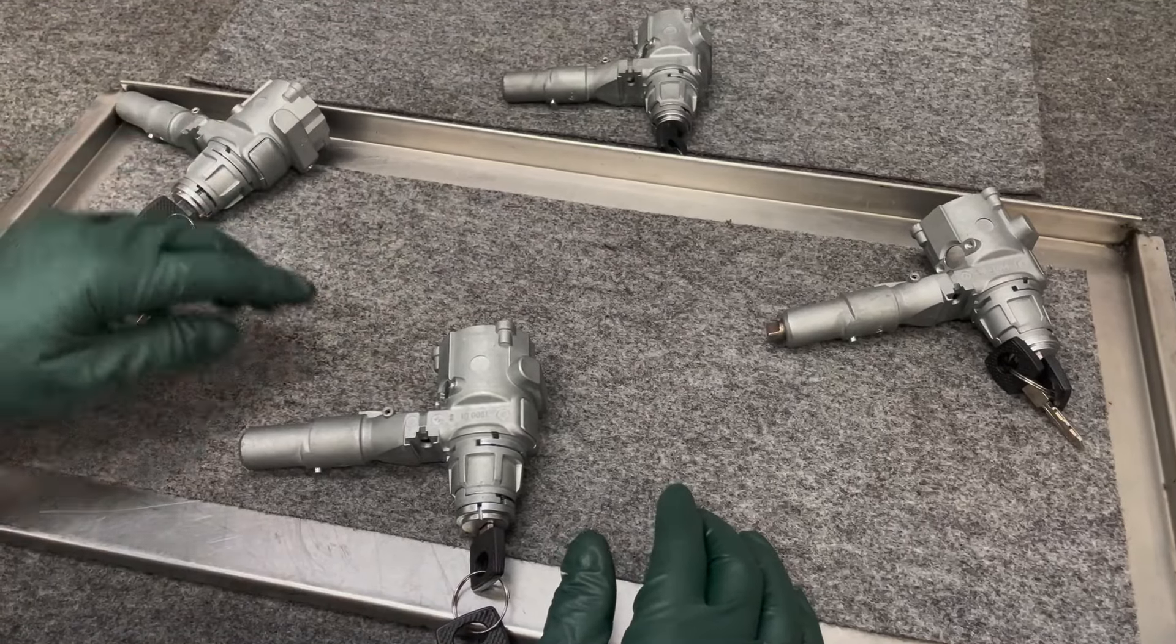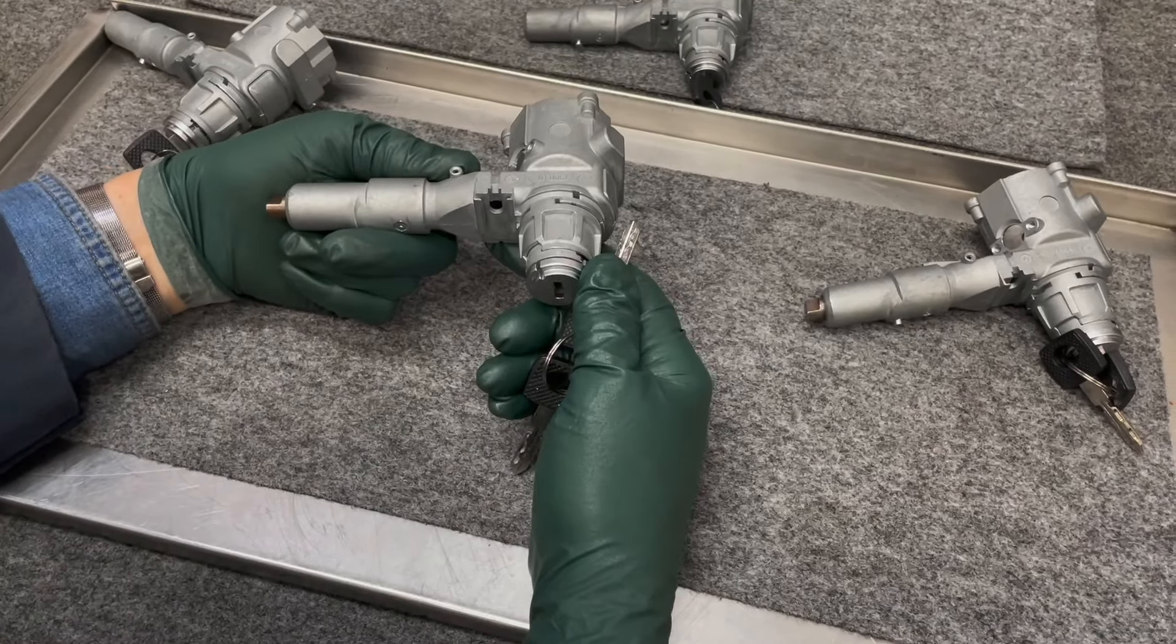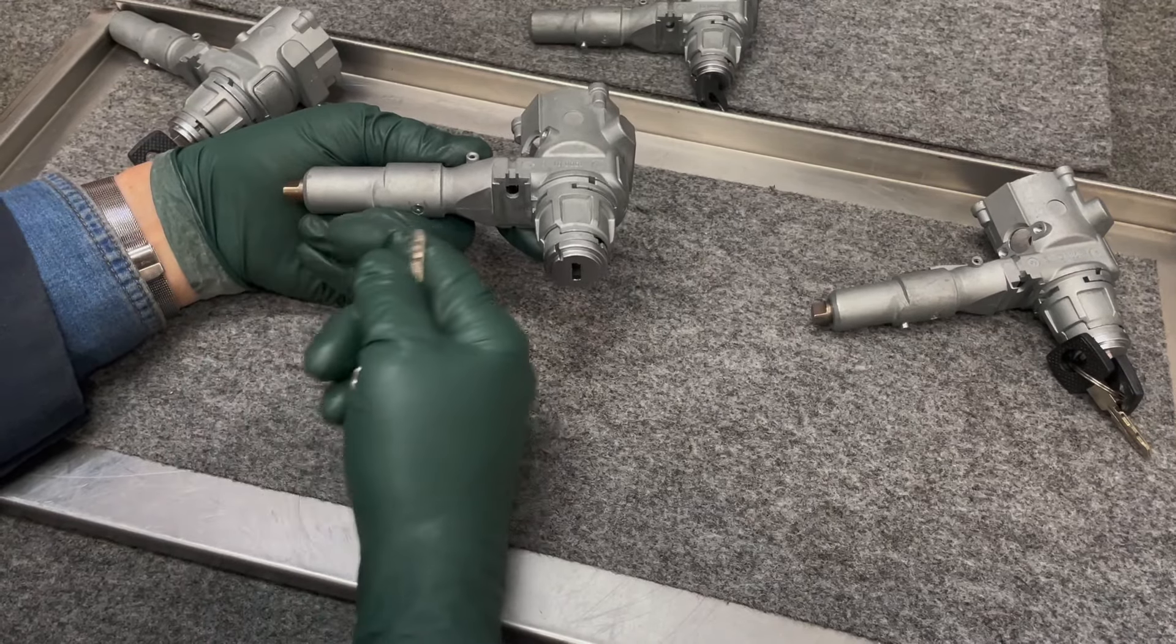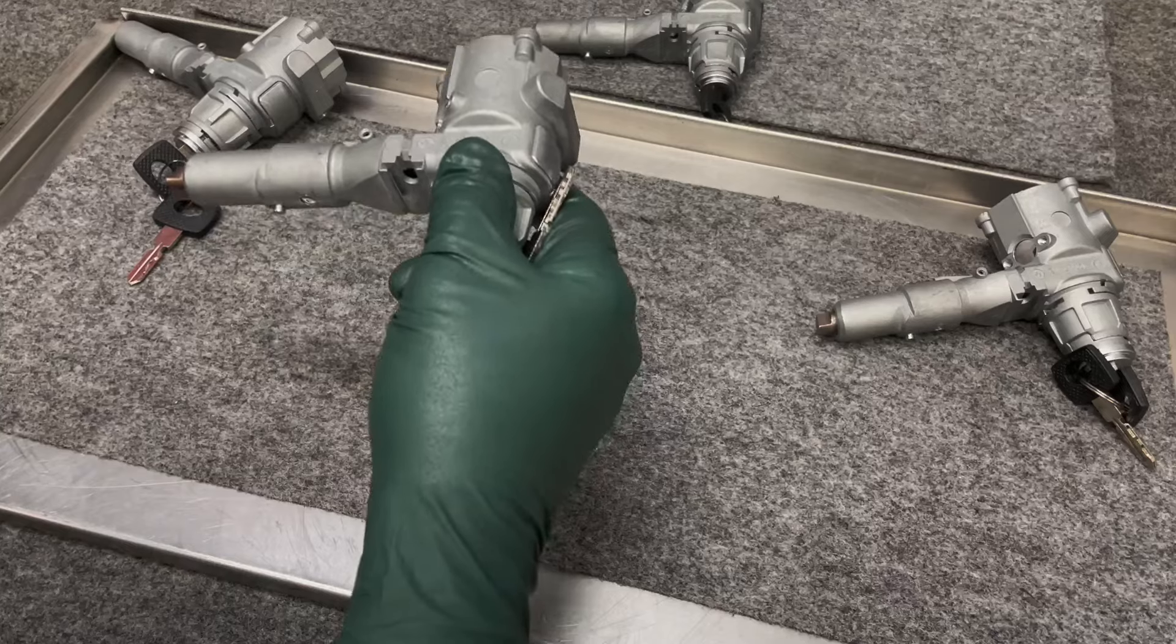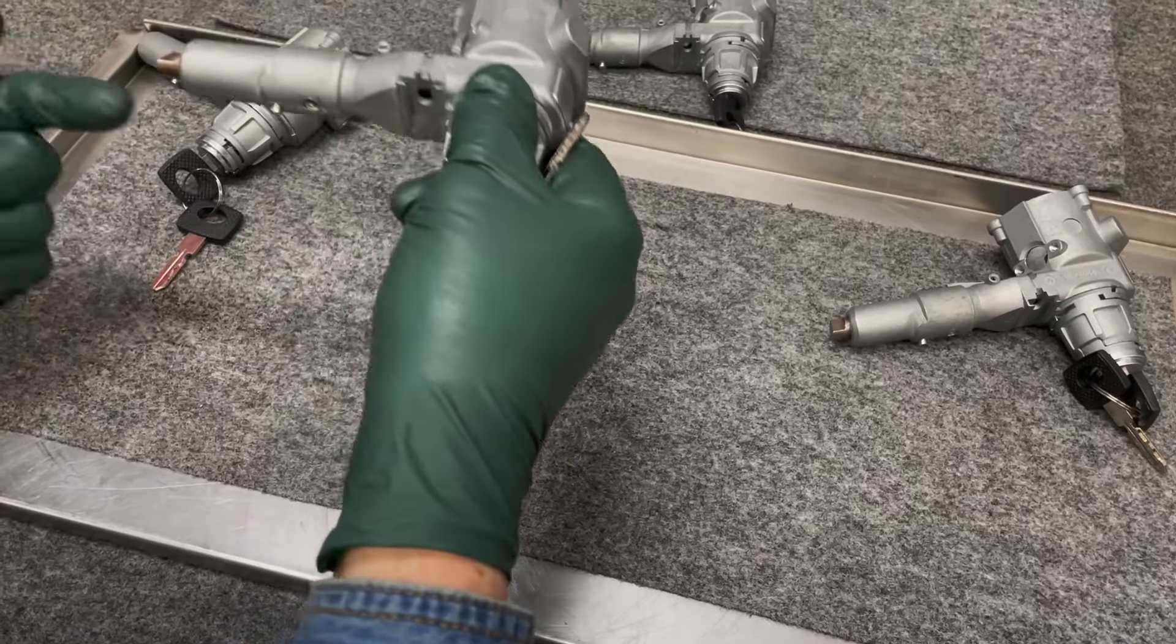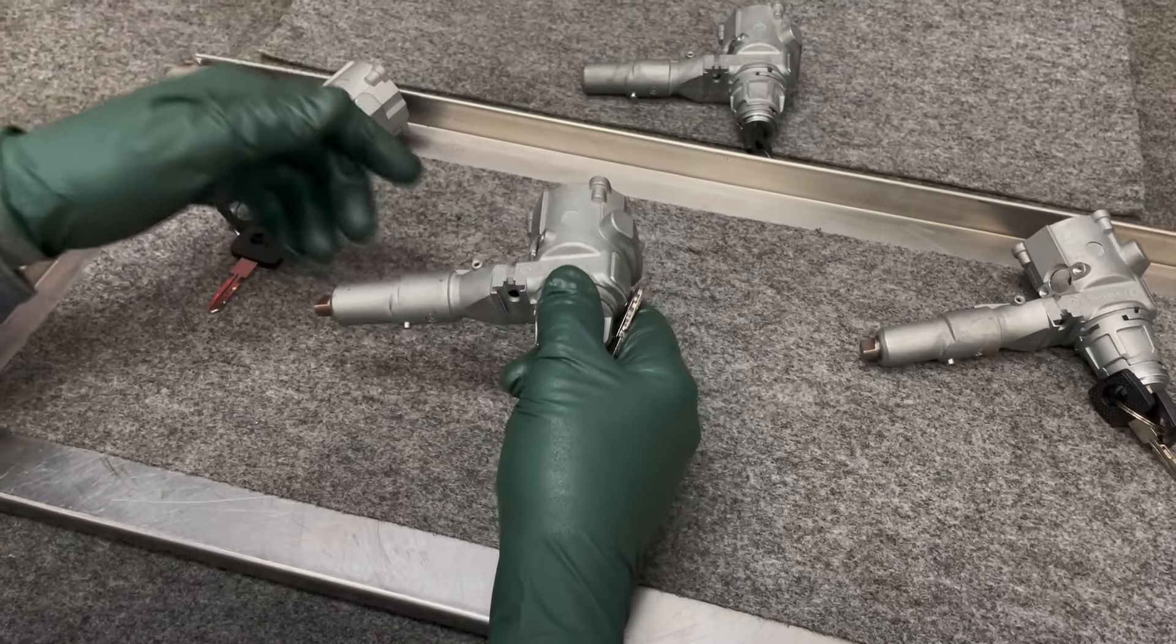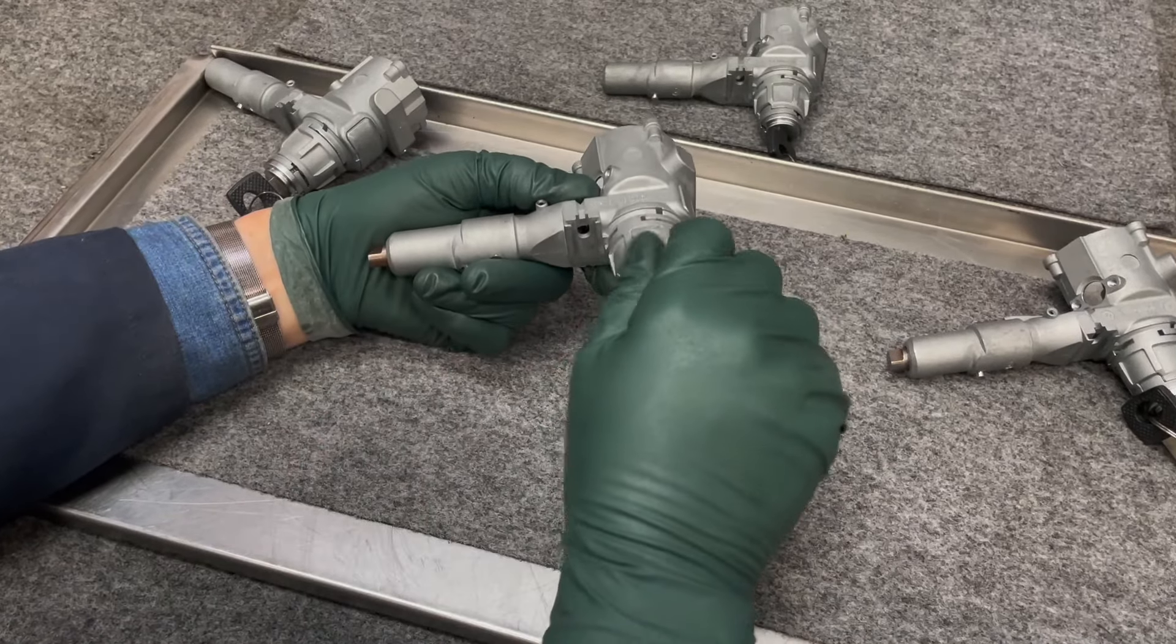First off I want to show you what it should look like. You pull the key out and this is sitting at rest. You have the steering lock that goes into the steering column that prevents you from turning the wheel. You may be able to turn the wheel but eventually this will drop into the cog in the shaft and lock the steering. When you insert the key and turn it on, look what happens to the steering lock.